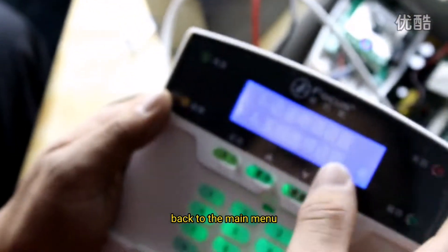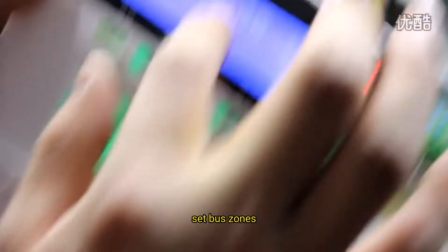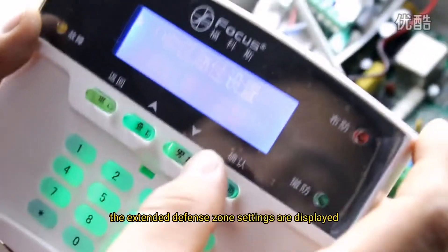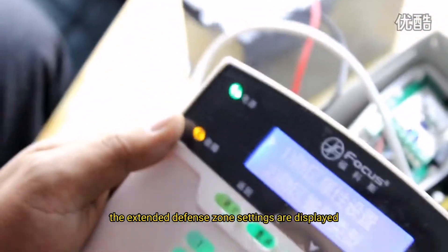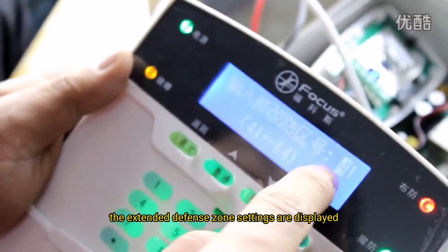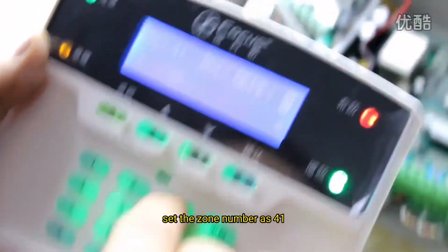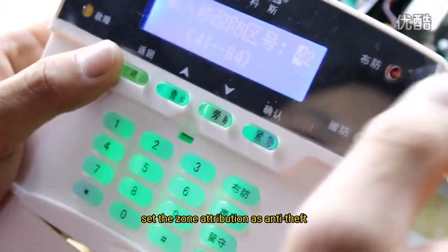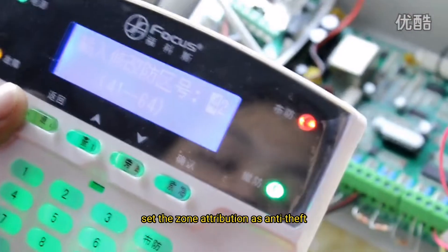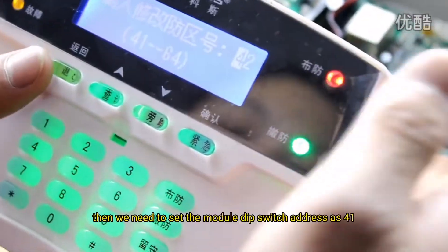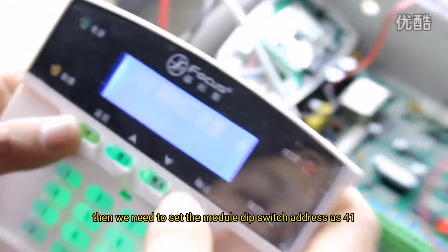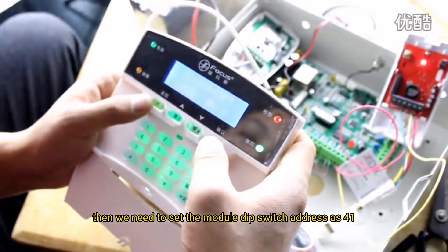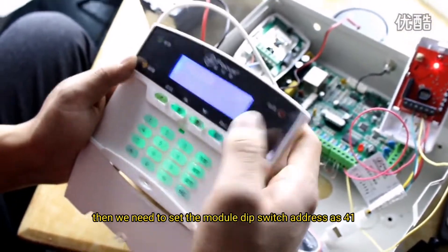Back to the main menu and set Bus Zones. The extended defense zone settings are displayed. Set the zone number as 41. Set the attribution as nt-set. Then we need to set the module DIP switch address as 41.